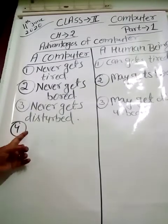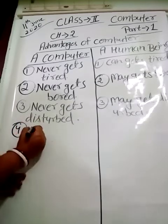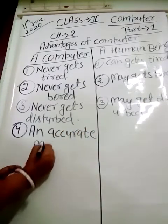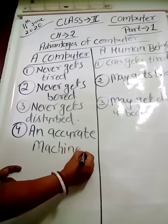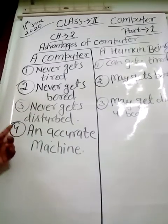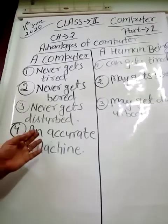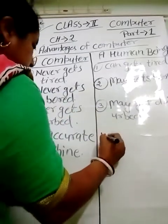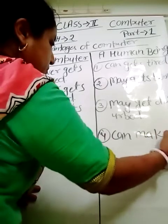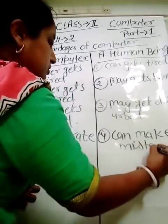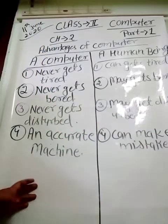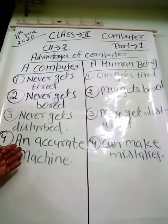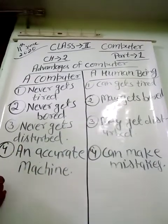In number four: a computer is an accurate machine. Computer never gets the wrong result — it cannot make mistakes, it is an accurate machine. But a human being can make mistakes. We are human beings and we can make mistakes doing our work, but a computer cannot make mistakes.